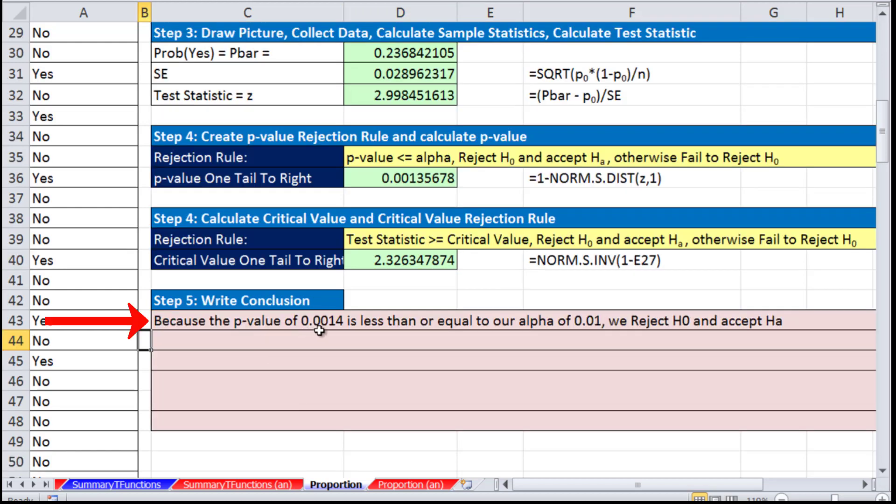Because the P of approximately 0.0014 is less than our alpha of 0.01, we reject the null and accept the alternative. Using our critical value rule, because the test statistic 2.99 is greater than the critical value of 2.33, we reject the null and accept the alternative.